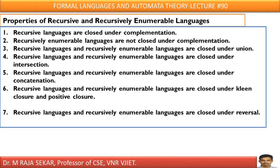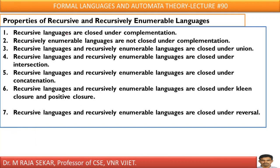The properties of recursive and recursively enumerable languages — these are closure properties. Recursive languages are closed under complementation. What does it mean? If L is a recursive language, then L complement is also a recursive language. A language is basically a set, so you can always find its complement. However, recursively enumerable languages are not closed under complementation — if L is a recursively enumerable language, L complement may not be a recursively enumerable language.